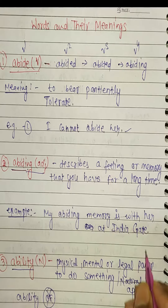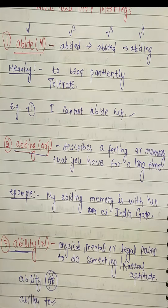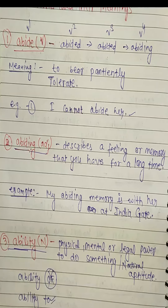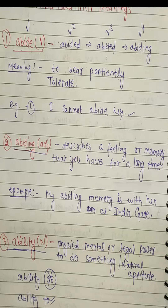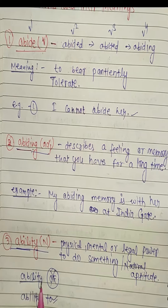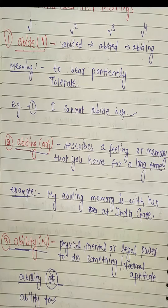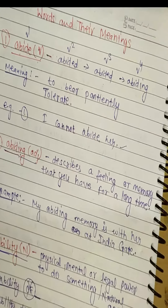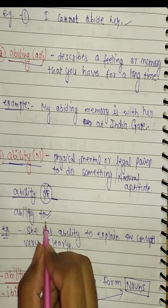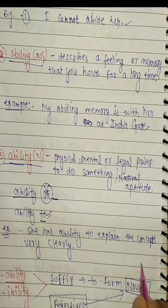The third word is 'ability', used as a noun. The meaning is the physical, mental, or legal power to do something, and sometimes natural aptitude. A common error is with preposition selection — do not use 'of' with ability. Always use 'ability to'. Example: She has the ability to explain concepts very clearly.